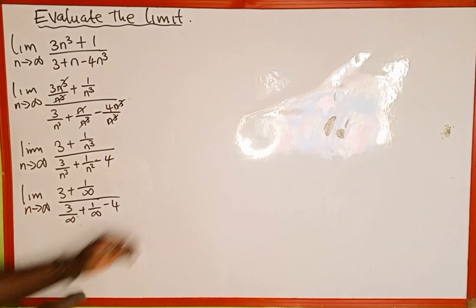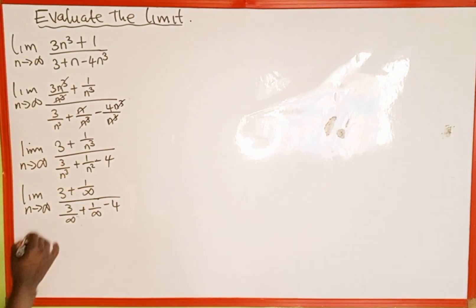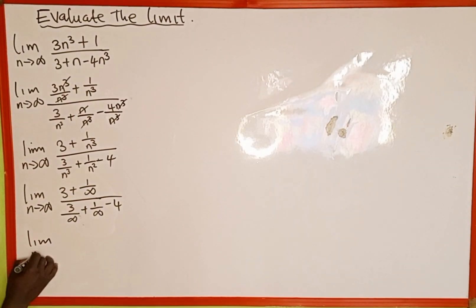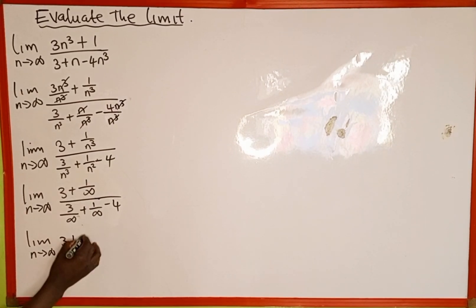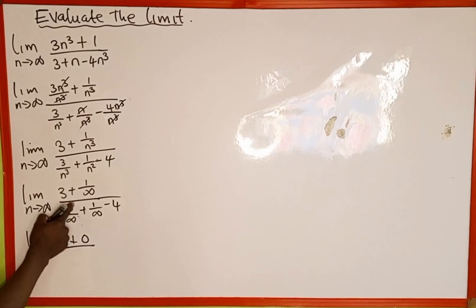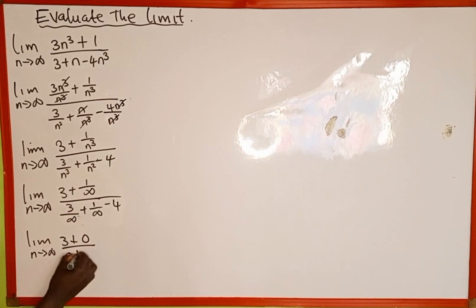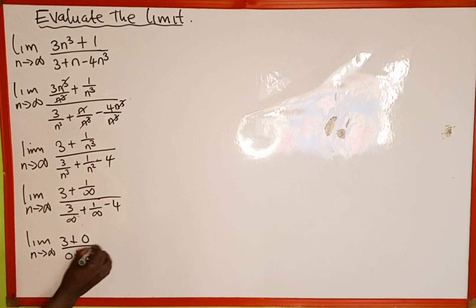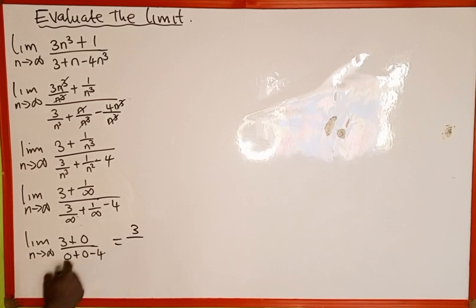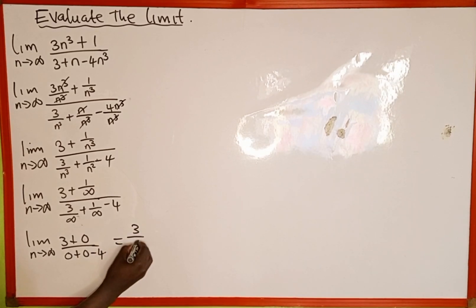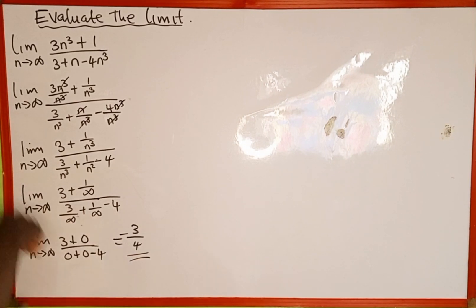We recall that dividing a constant by infinity equals zero. So 1 divided by infinity is zero, and 3 divided by infinity is zero. This gives us: 3 plus 0, all over 0 plus 0 minus 4, which simplifies to 3 divided by negative 4. Therefore, this limit equals negative three over four.